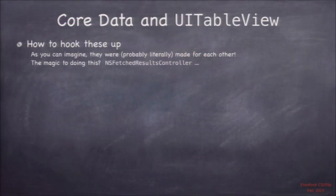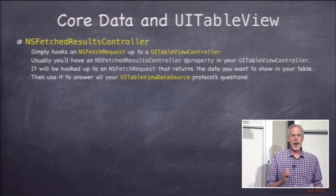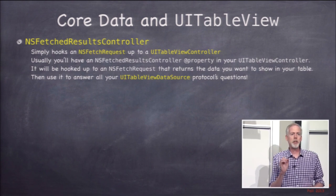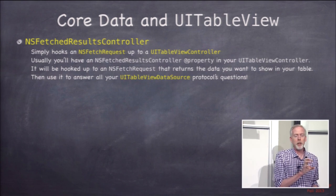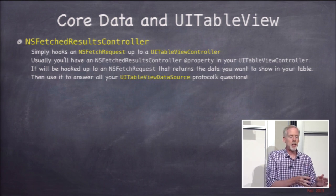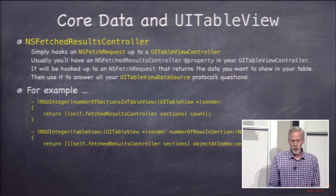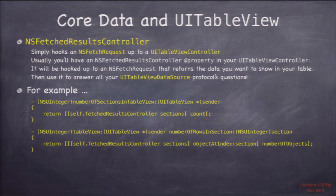The next topic is Core Data and UITableView — how they go together. There's a great class in iOS called NSFetchedResultsController. Its only purpose in life is to link an NSFetchRequest with a UITableView. It basically bonds those two things together so that anything the fetch would be fetching is always shown in the table view, even if the database is changing underneath that fetch request — it will keep updating the table view.